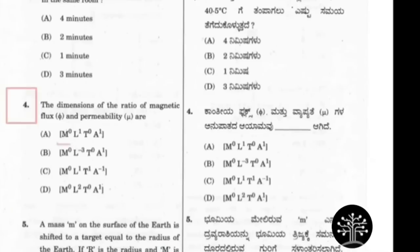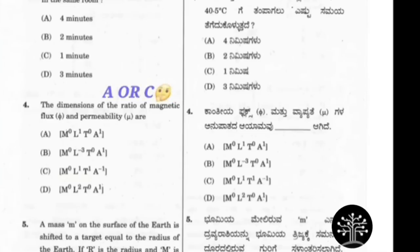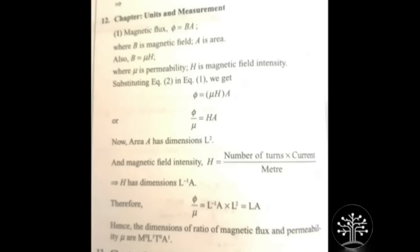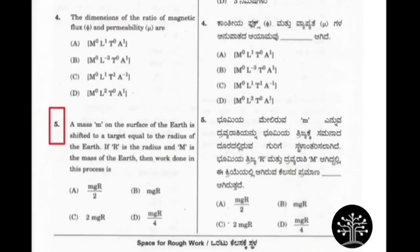This is from Units and Measurements. Option A and option C are similar — both have M0 at the start. T0 is repeated in option A and option B. Among option A and option C, option B is supporting option A, therefore the correct answer will be option A, which is M0 L1 T0 A1.